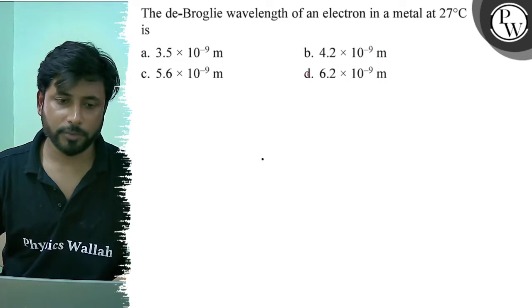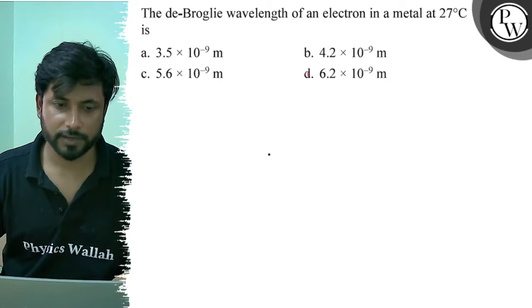Option A: 3.5 x 10^-9 m, option B: 4.2 x 10^-9 m, option C: 5.6 x 10^-9 m, and option D: 6.2 x 10^-9 m.